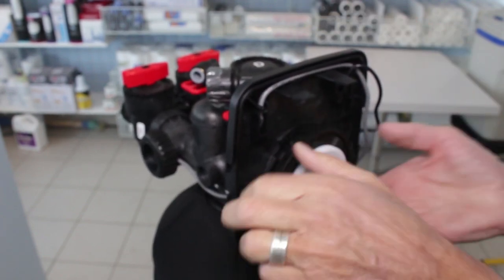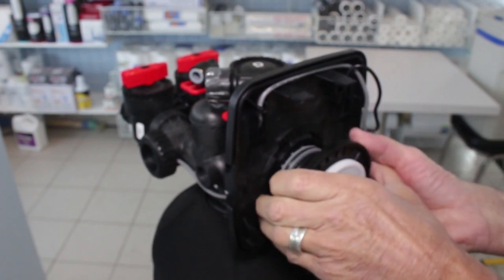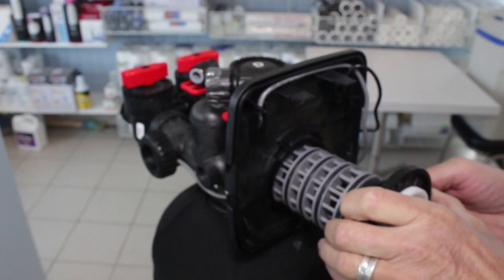Then you just unscrew the drive assembly. Once it's loose, you just gently pull that out. Oh, there's a little bit of water in this one. Pull that out.